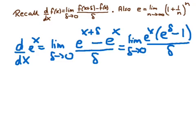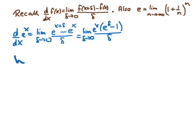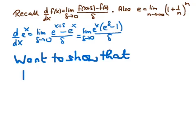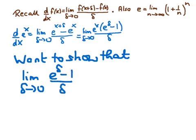The x dependence has been extracted — it does not depend on delta, so we can pull it through. We then need to show that the limit as delta approaches 0 of e to the delta minus 1, all divided by delta, is equal to 1. That is the key property: the derivative of e to the x is just e to the x.